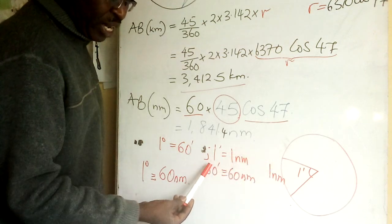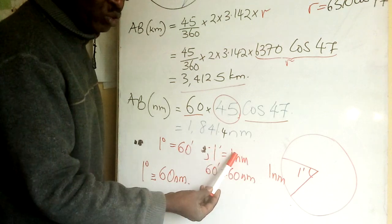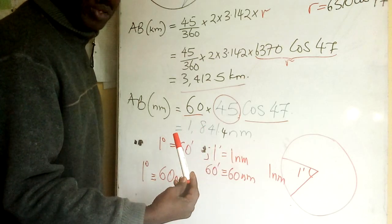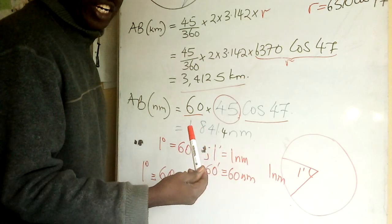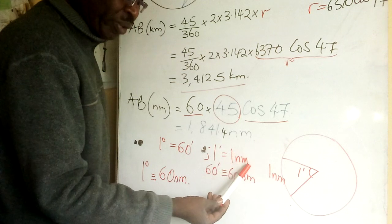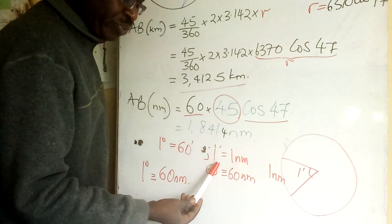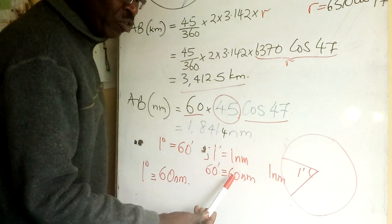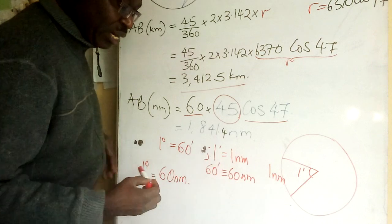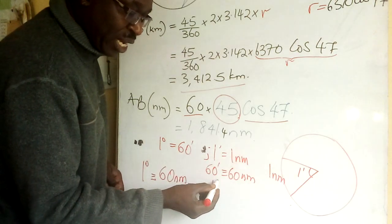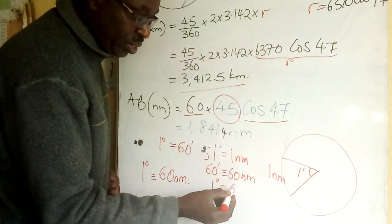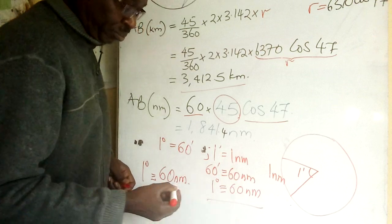If one minute subtends an arc length of one nautical mile, and we know that one degree is 60 minutes, if I multiply this side by 60, I also multiply this side by 60. So one minute has an arc length of one nautical mile, therefore 60 minutes will have an arc length of 60 nautical miles. But these 60 minutes can be substituted to one degree, which will be 60 nautical miles.